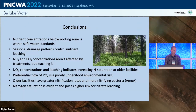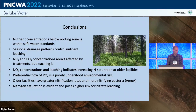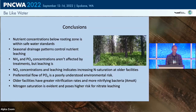Preferential flow related to phosphate is a poorly understood process we need to investigate further and are seeking funding for. Older facilities have greater nitrification rates and nitrifying bacteria — concerning for nitrogen saturation. These lab tests of nitrification and amoA gene quantity could also be applied to agricultural fields with excessive nitrogen application or natural systems subject to nitrogen deposition.